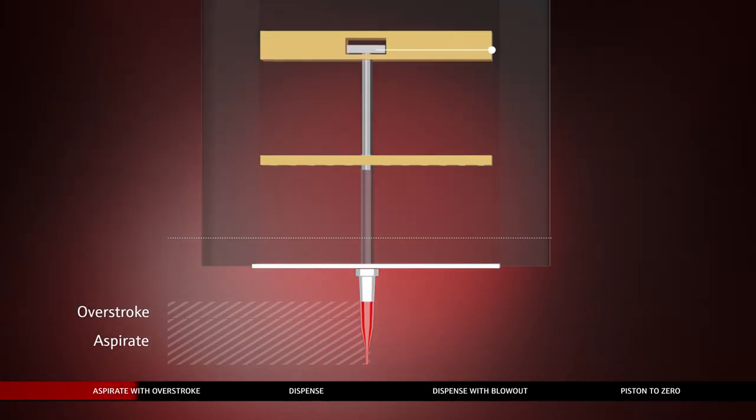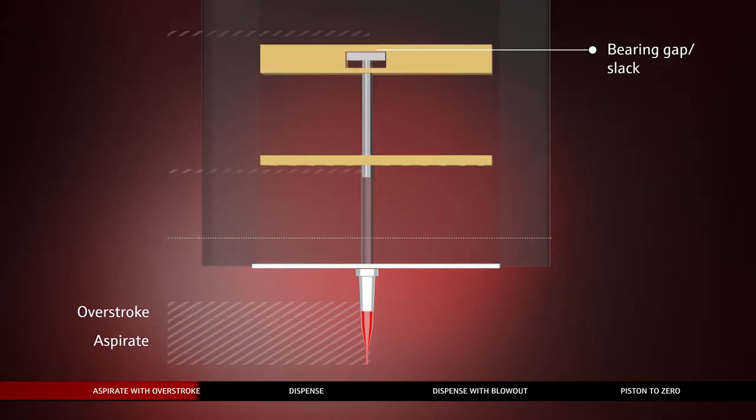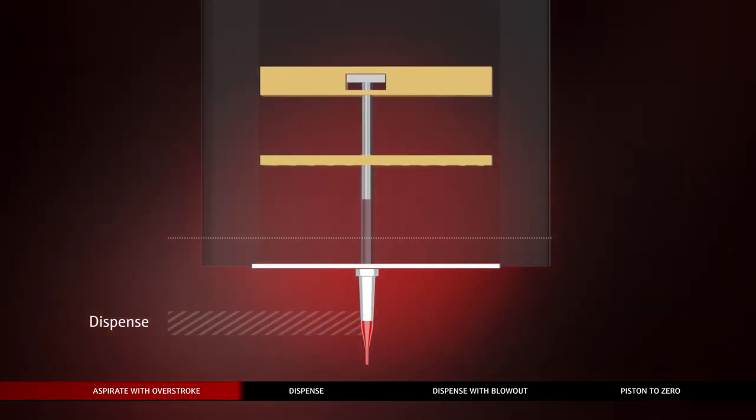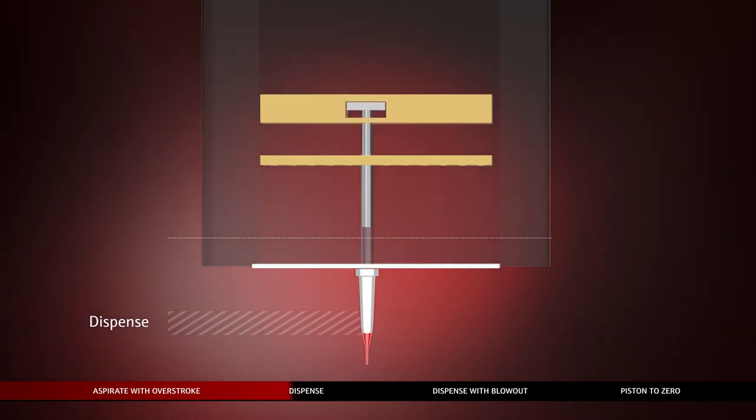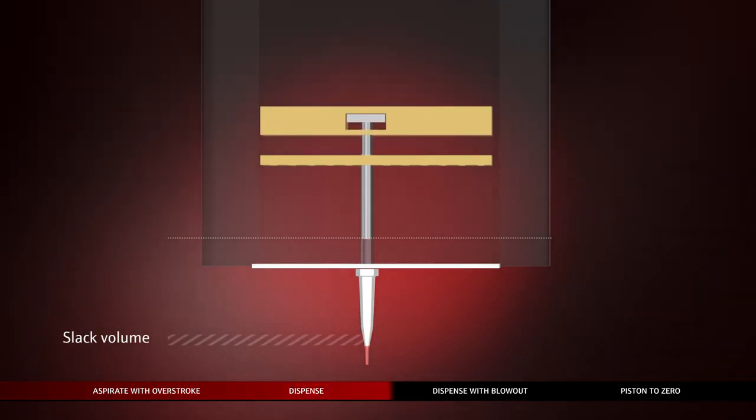The desired volume and an additional volume known as the overstroke volume are aspirated during this step. The piston moves forward, executes the piston reversal, and a slight downward movement to ensure that the exact desired volume can be dispensed into the target cavity, which is the dispense step.